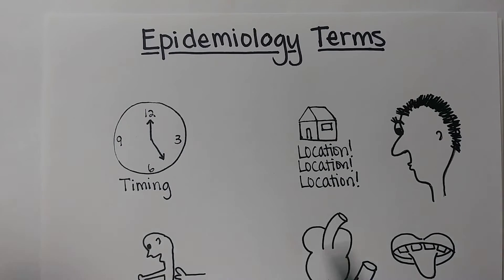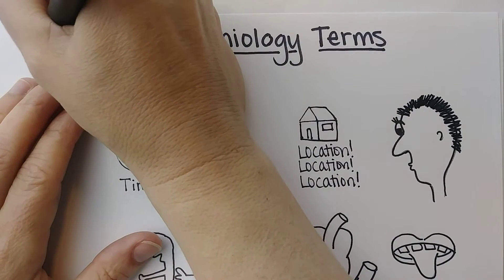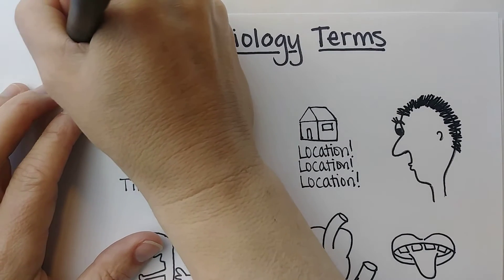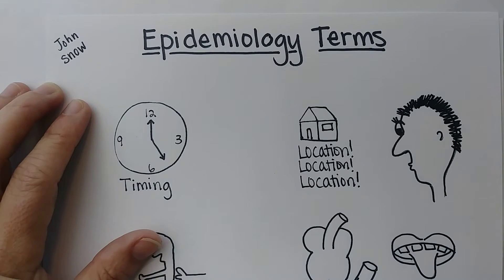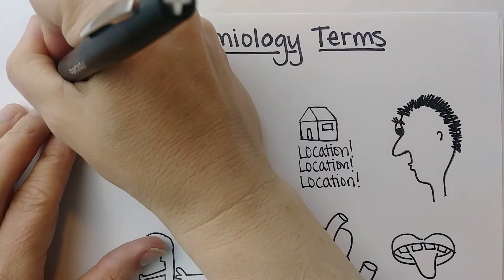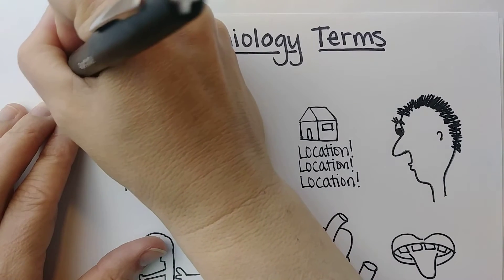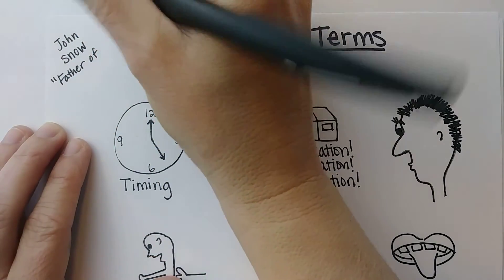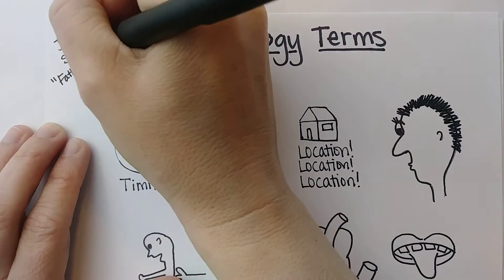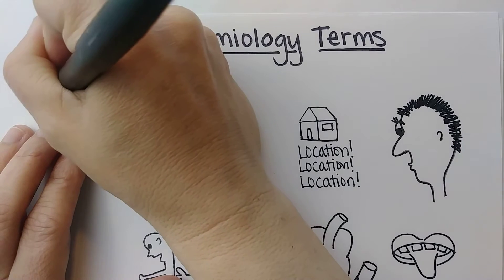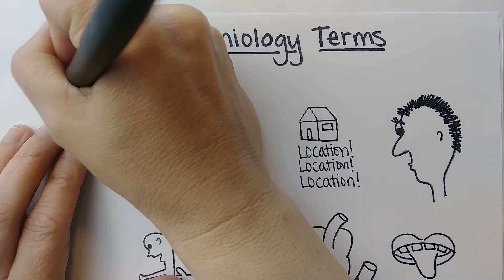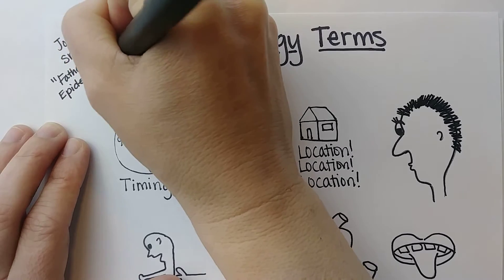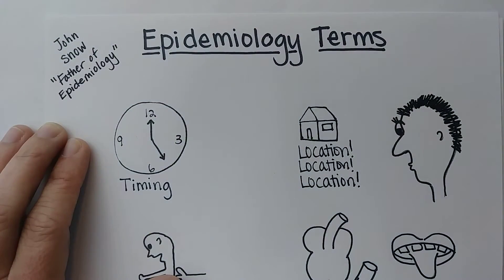Let's start with a little bit of history. John Snow lived in the 1800s in London and he is considered the father of epidemiology. He's famous for tracking down the cause of a cholera outbreak, and also for working on anesthesia and delivering one of Queen Victoria's babies.